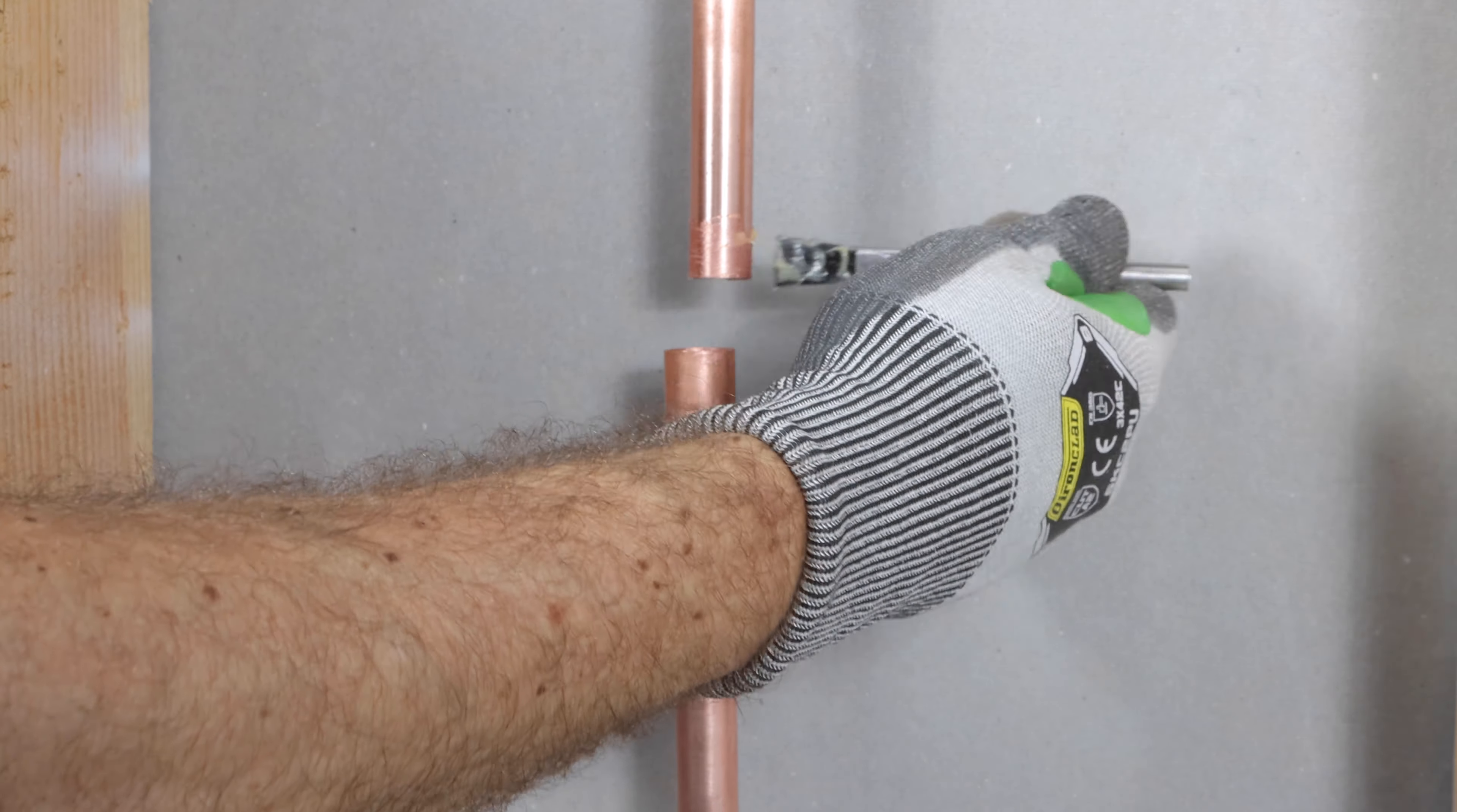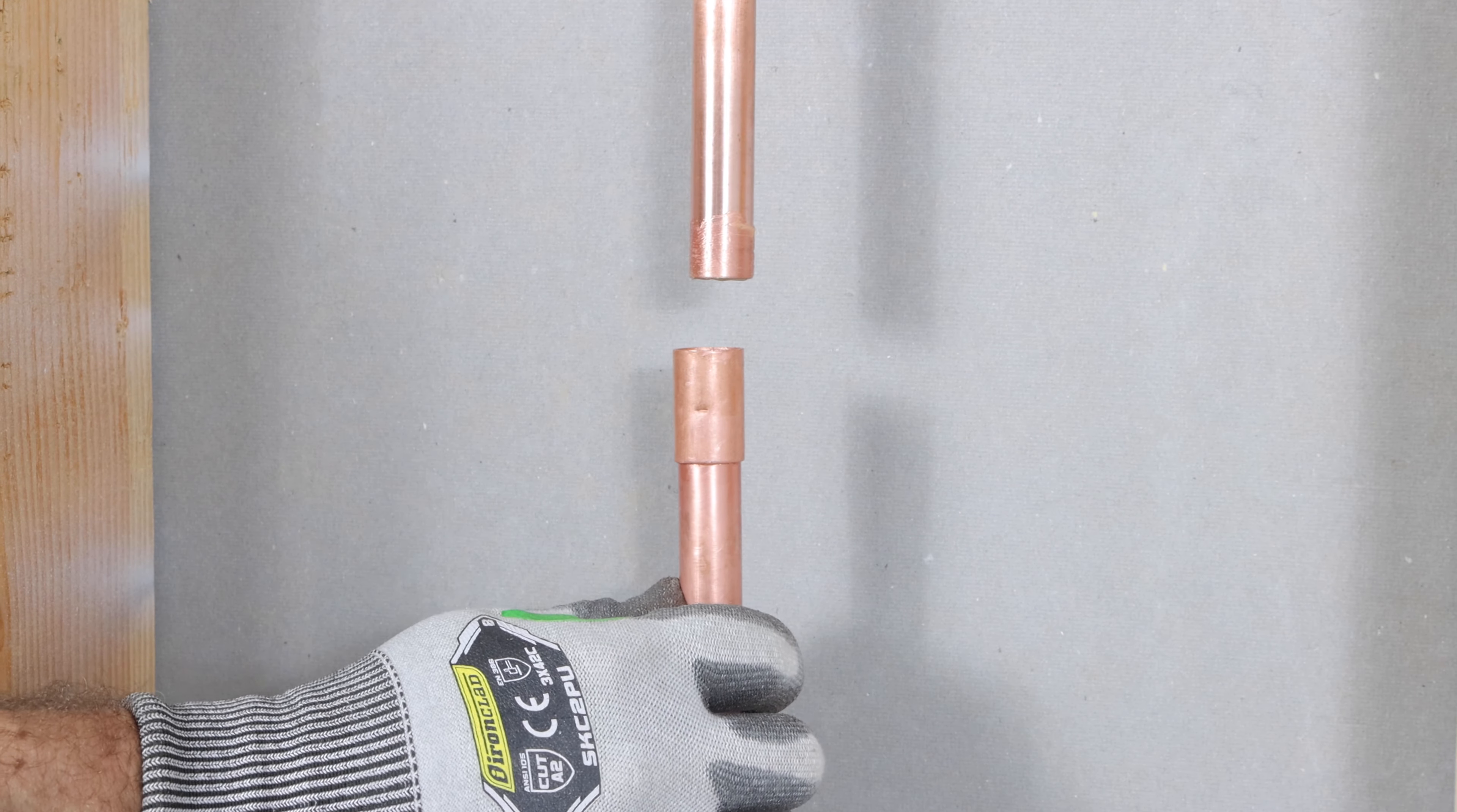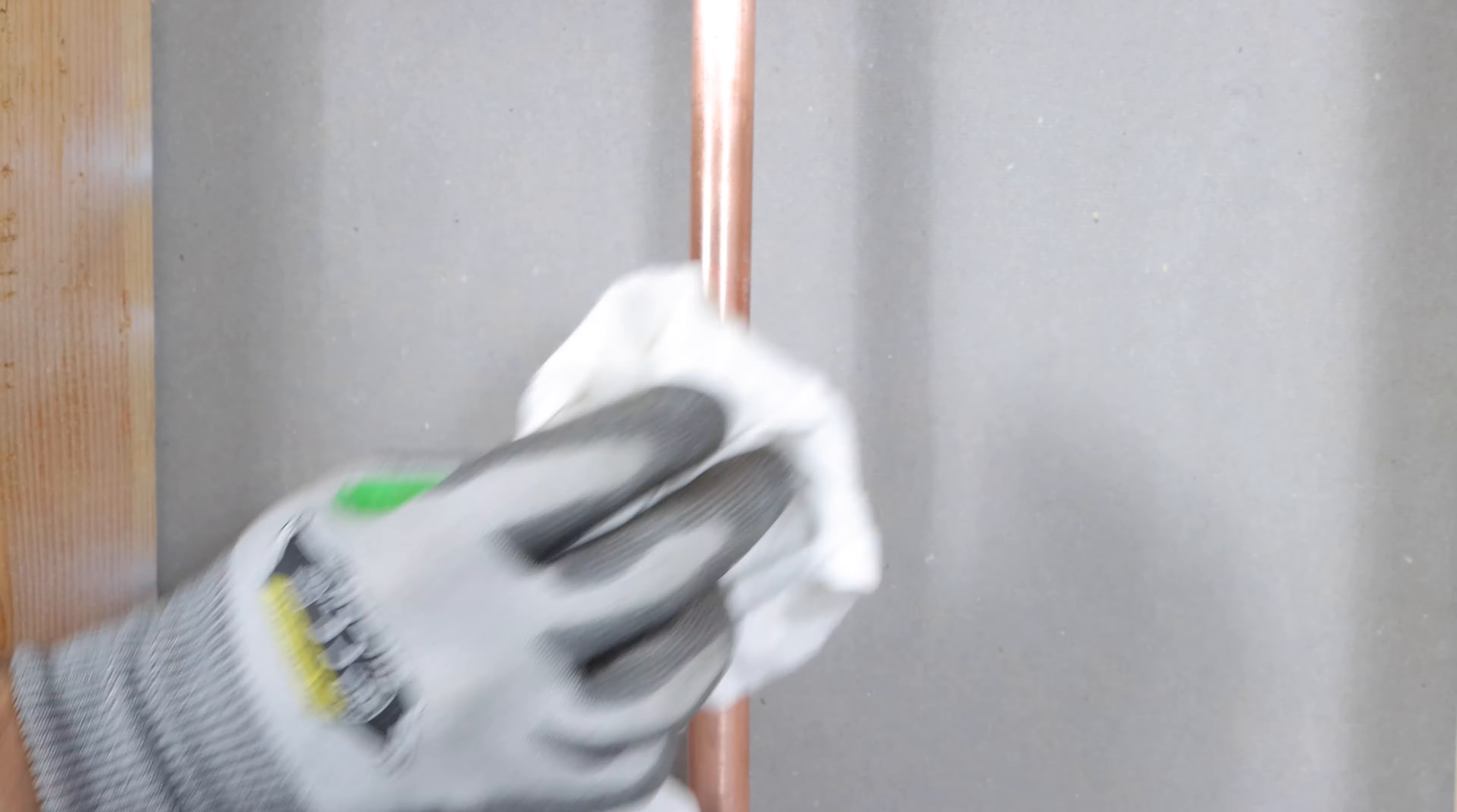Once again, you don't need a ton of flux. Just a little thin layer. Then you can push that pipe down into the coupling, and then remove all the excess flux from the surface.